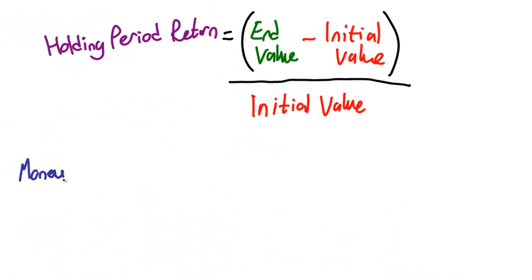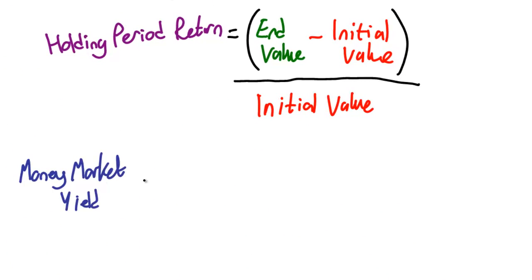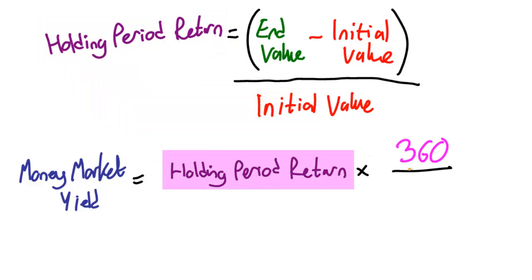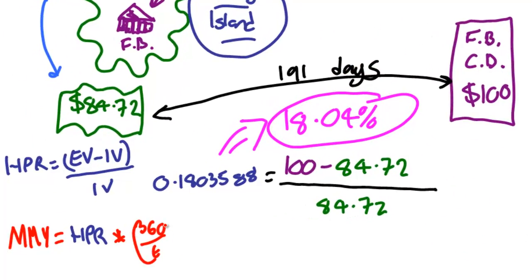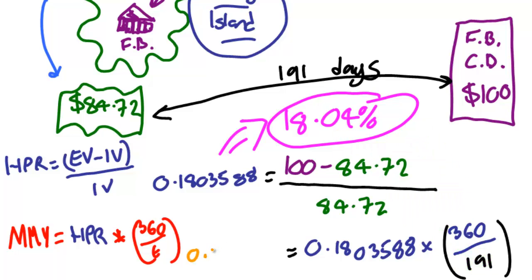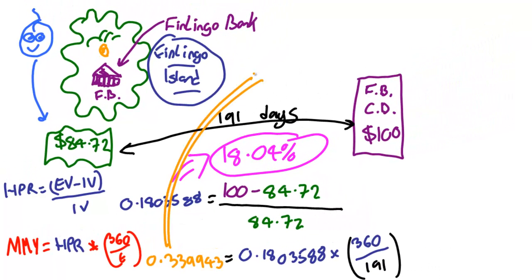Here's where the Money Market Yield helps us compare one potential investment to another over time. Here's the equation: The Money Market Yield is equal to the holding period return multiplied by 360 divided by the time to the maturity of the investment. So in our case, that's 0.1803588 multiplied by 360 and divided by 191, which is 0.339943, or approximately 33.99%. The only tricky thing to remember is that we always use 360.